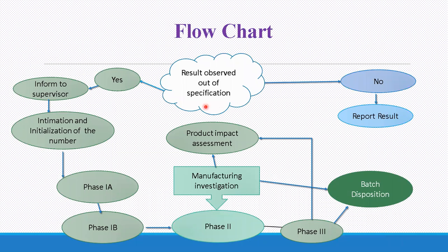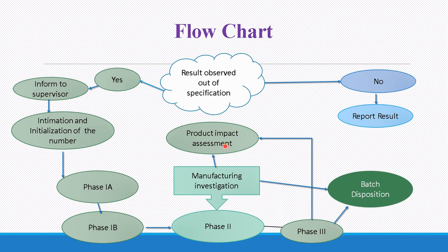Flowchart overview: A result is observed as out of specification. If no, report your result. If yes, inform the supervisor, complete intimation and initiation of the OOS number. Then proceed to Phase 1A, Phase 1B, Phase 2 manufacturing investigation, and Phase 3. Finally, on the basis of investigation, detail, and product impact assessment, batch disposition and impact assessment are performed.